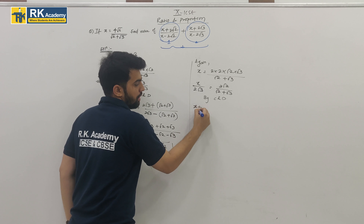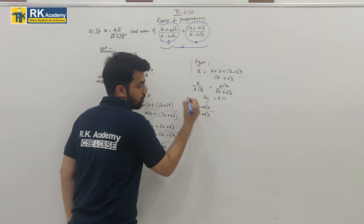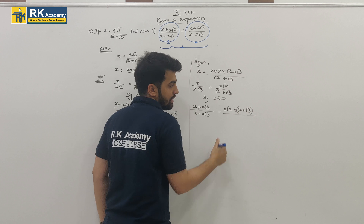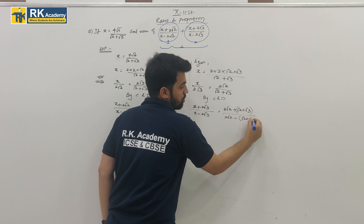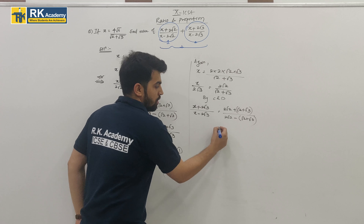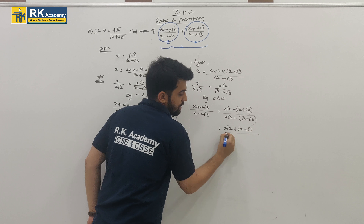By componendo and dividendo: (x + 2√3)/(x − 2√3) = (2√2 + √2 + √3) / (2√2 − (√2 + √3)). The bracket on the denominator is really important because there's a minus outside. Opening it: numerator = 3√2 + √3; denominator: 2√2 − √2 − √3 = √2 − √3. So (x + 2√3)/(x − 2√3) = (3√2 + √3)/(√2 − √3). This is Equation 2.